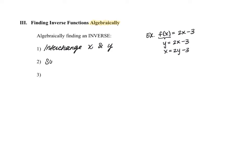Then you're going to go ahead and solve for y — isolate y. In my example, I would add 3 to both sides, so x plus 3 is equal to 2y. And then divide both sides by 2, so y would be equal to x plus 3 divided by 2.